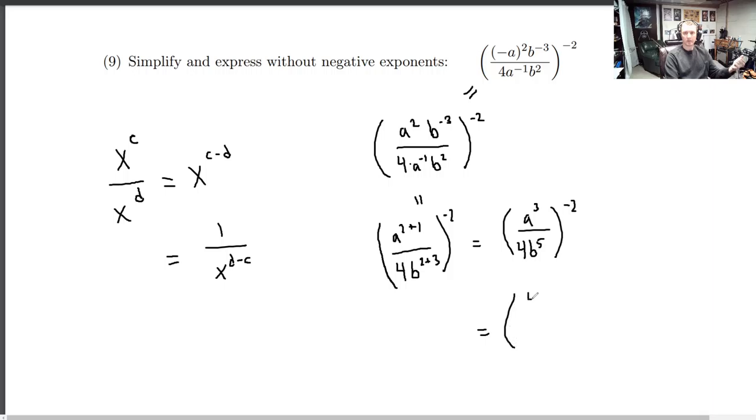So this is 4b to the 5th over a cubed squared, and that will square everything. So this is 4 squared, which is 16. b to the 5th squared is b to the 10th, and a cubed squared is a to the 6th. Okay, so 16b to the 10th over a to the 6th. There you have it.